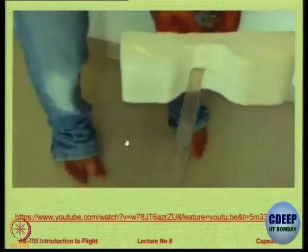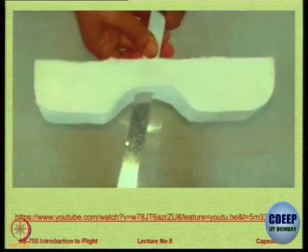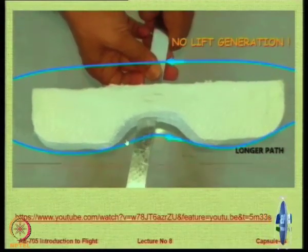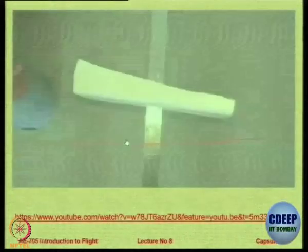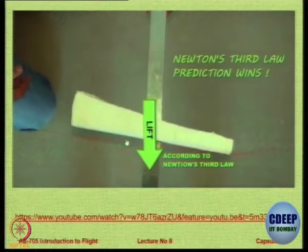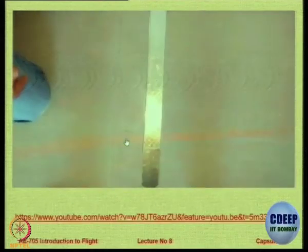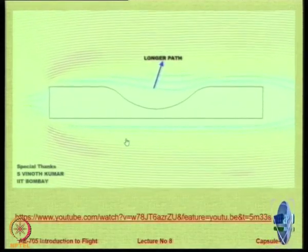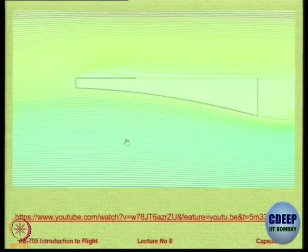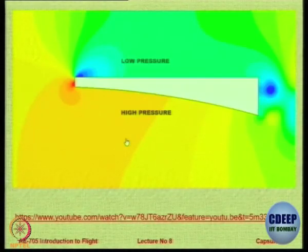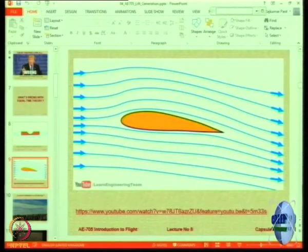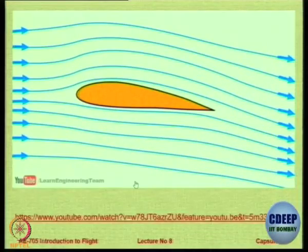We placed this particular symmetric shape in a string to represent the flow direction, with a fan blowing air. You can see the string is bending. We also conducted a CFD analysis to prove the same thing. So the equal time theory is debunked — it simply does not work for symmetric bodies.